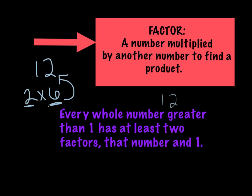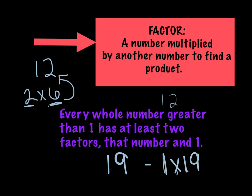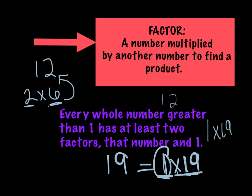Here is some important information about factors. Every whole number that's greater than 1 has at least two factors — it's going to be that number and 1. So here's an example: if I have the number 19, it will have at least two factors — 1 times 19 equals 19. Even though there's no other numbers you can multiply together to get 19, it still has these two factors, 1 and 19.